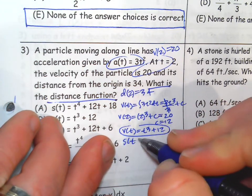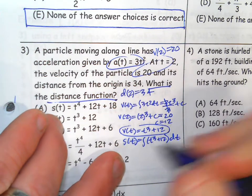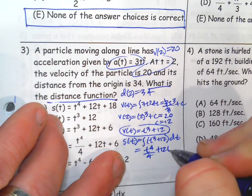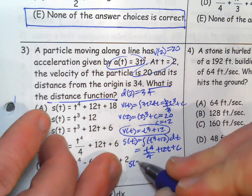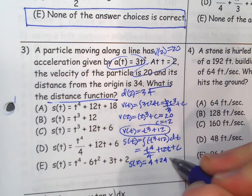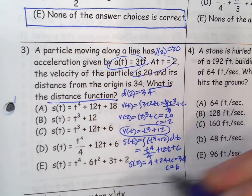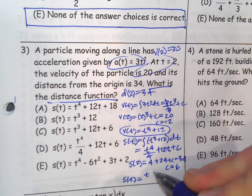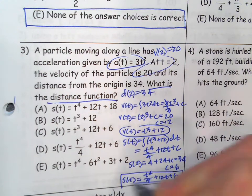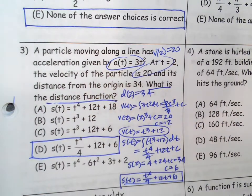Use the initial condition. If you plug 2 in, it should come out to 20. So C equals 12. So the velocity function equals t cubed plus 12. So the position function is going to be the integral of that. So that's going to be t to the 4th over 4 plus 12t plus C. And then we use the initial condition, plug 2 in. That's going to be 16 over 4 is 4 plus 24 plus C should equal 34. So C equals 6. So the position function would be t to the 4th over 4 plus 12t plus 6.